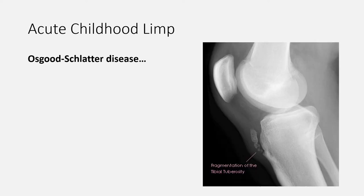Another cause of acute childhood limp is Osgood-Schlatter disease — multiple small avulsion fractures within the ossification centre of the tibial tuberosity at the inferior attachment of the patellar ligament, caused by forceful contractions of the quadriceps muscles. It is a usually self-limiting disorder causing anterior knee pain during adolescence, particularly in children active in sport. On examination, there may be tenderness and firm or bony enlargement of the tibial tuberosity. X-ray is not required routinely, but if undertaken, it may be normal or may demonstrate anterior soft tissue swelling and fragmentation of the tibial tubercle.